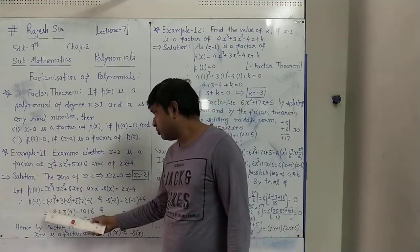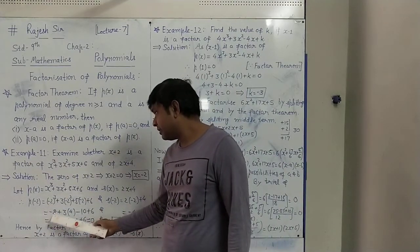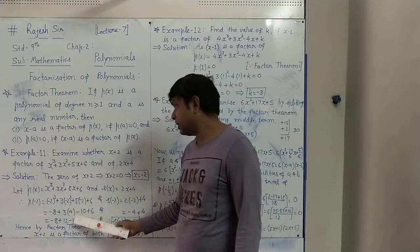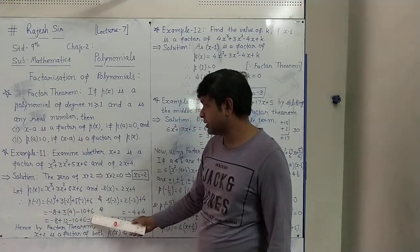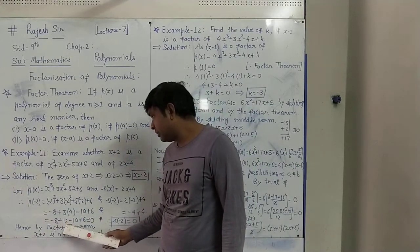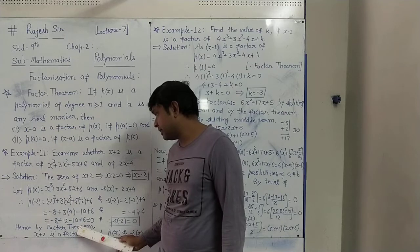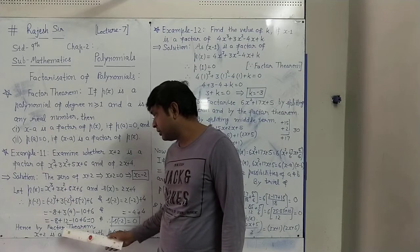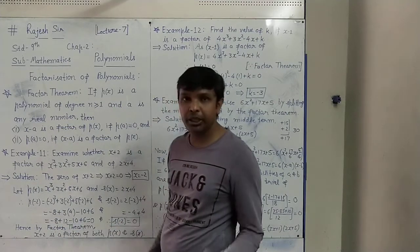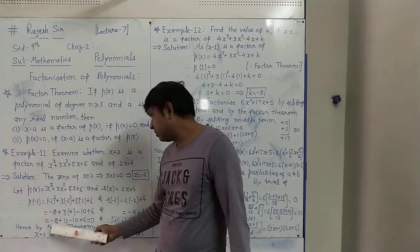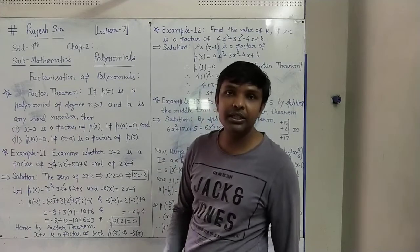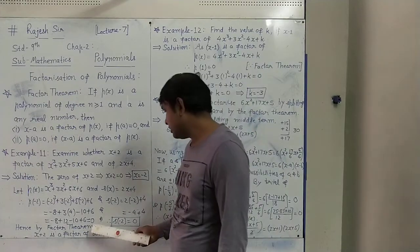So it will be: minus 2 cubed is minus 8, 3 times minus 2 squared is plus 12, 5 times minus 2 is minus 10, plus 6 as it is. Now the positive numbers plus 12 and plus 6 give 18, and the negative numbers minus 8 and minus 10 give minus 18. Plus 18 and minus 18 equals 0.